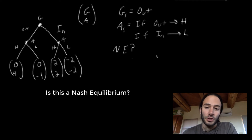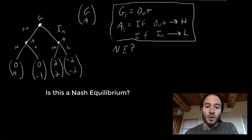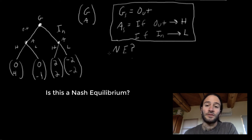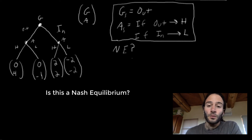To see if this is a Nash equilibrium, we just need to check if any player has an incentive to change its strategy, leaving the other players' strategies constant. Let's first look at Google.